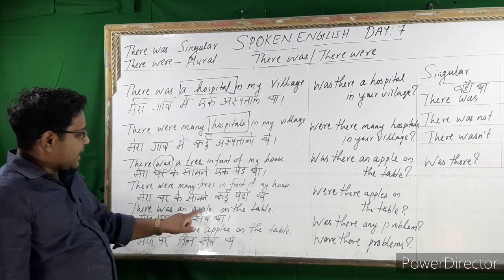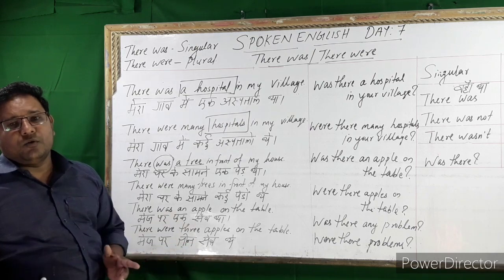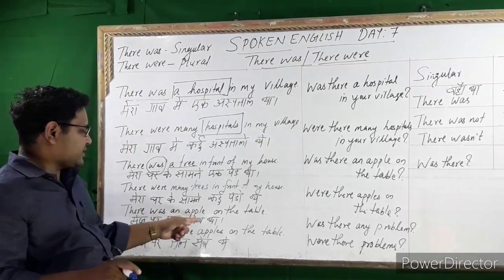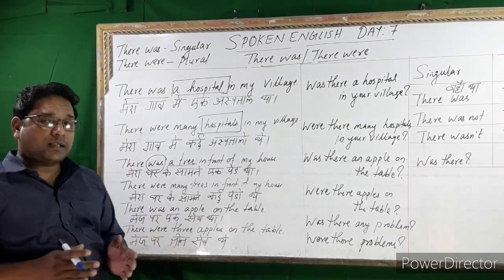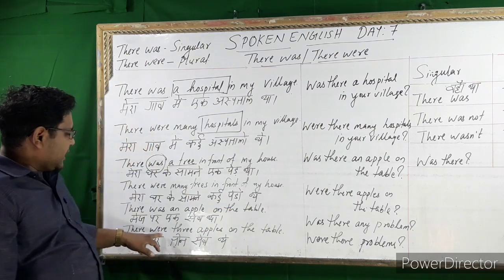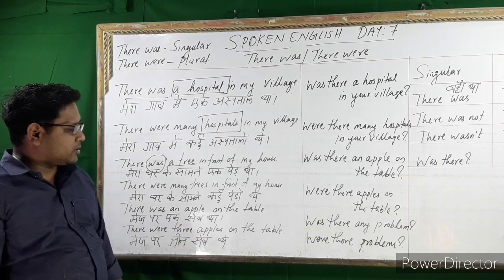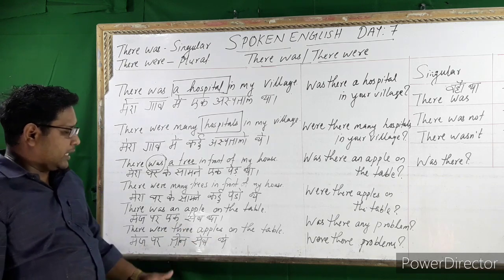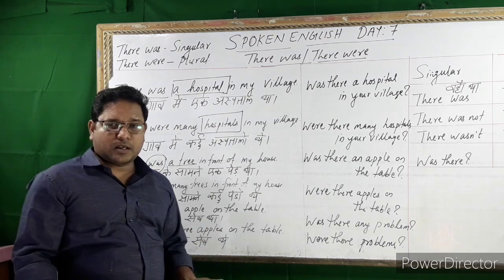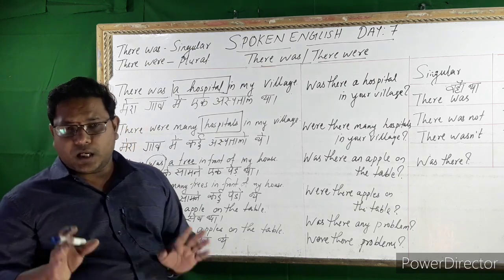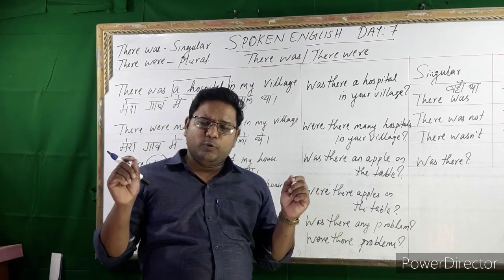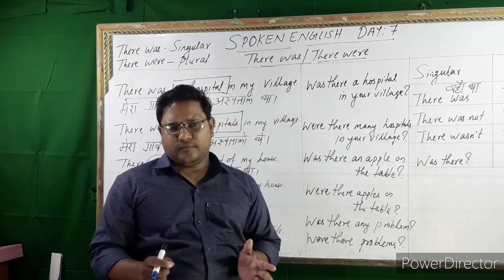'There was an apple on the table.' That means there was one apple on the table. 'There were three apples on the table' — we can make many sentences like this using 'there was' for singular and 'there were' for plural.